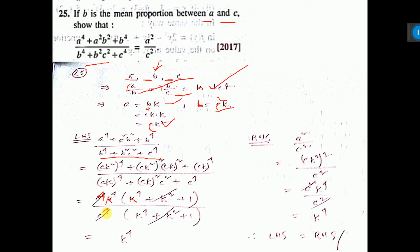take C to the power 4 common. This is K to the power 4 plus K square plus 1. So, what is left? K to the power 4.